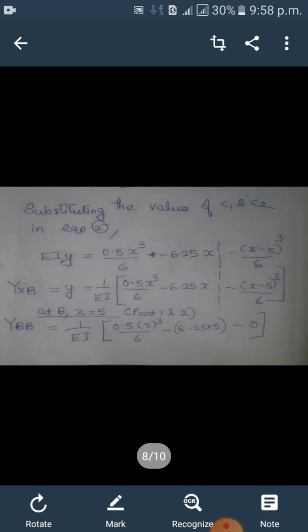Now how do we get YBB? At B, x equals 5. So apply x equals 5, and you can consider only part 1. So here it is a mistake - you consider only part 1. Only for values greater than 5 you have to consider both parts.